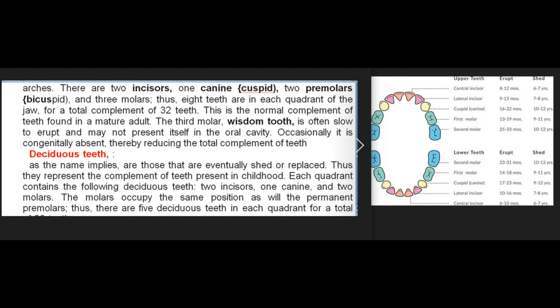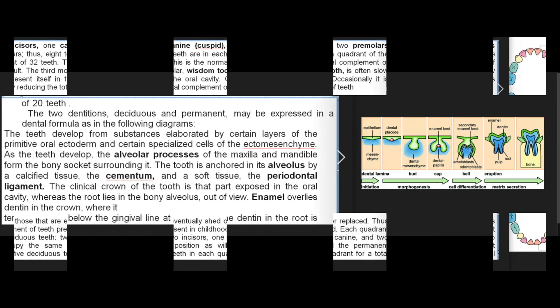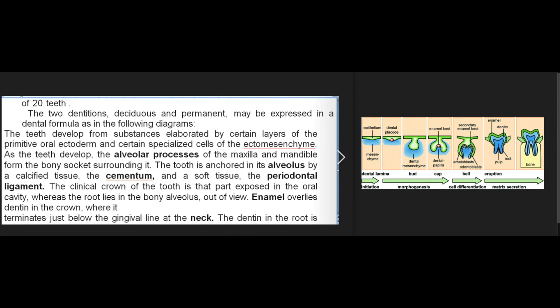Deciduous teeth represent the complement of teeth present in childhood. Each quadrant contains the following deciduous teeth: two incisors, one canine, and two molars. The molars occupy the same position as will the permanent premolars; thus there are five deciduous teeth in each quadrant for a total of 20 teeth. The two dentitions — deciduous and permanent — may be expressed in a dental formula.